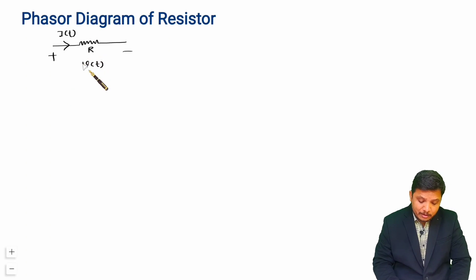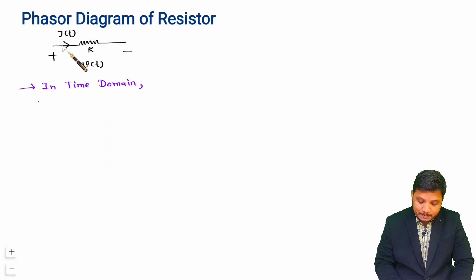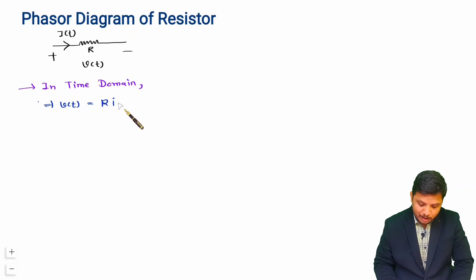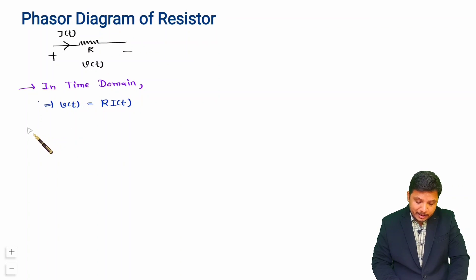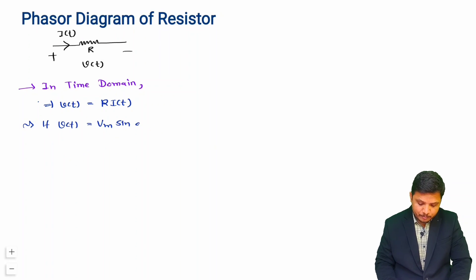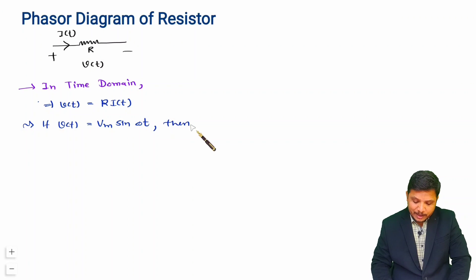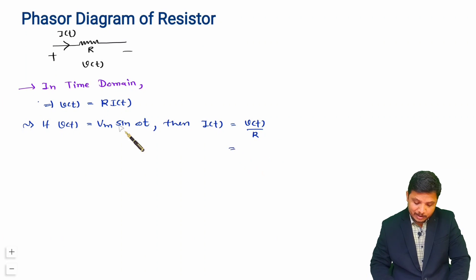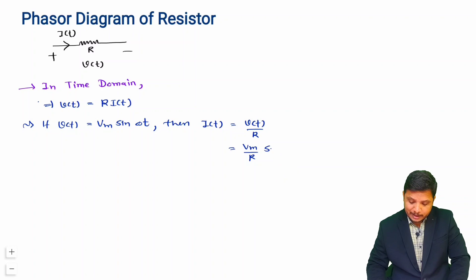Let us understand what is happening with this resistor in time domain. As per Ohm's law, voltage V(t) equals resistance R multiplied by current I(t). Since we are drawing a phasor diagram, we need to apply AC input. So let us consider our input V(t) as the sinusoidal input Vm sin(ωt). Then the current I(t) will be V(t) divided by R, which gives I(t) = (Vm/R) sin(ωt).